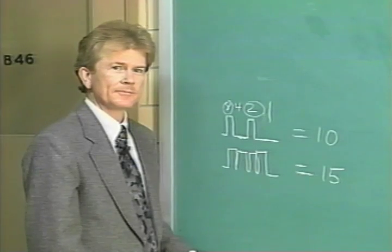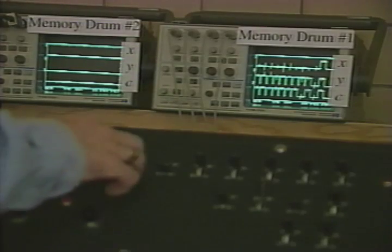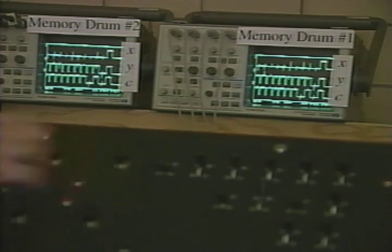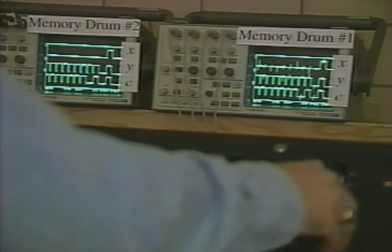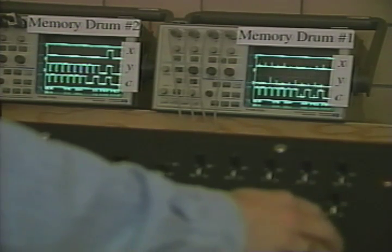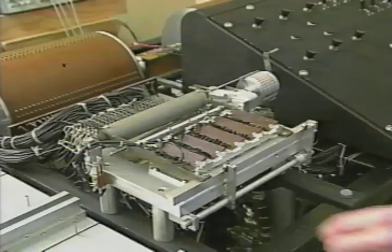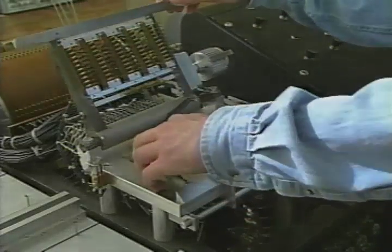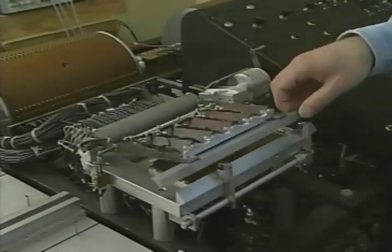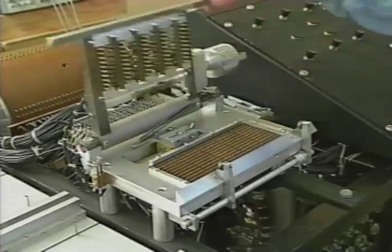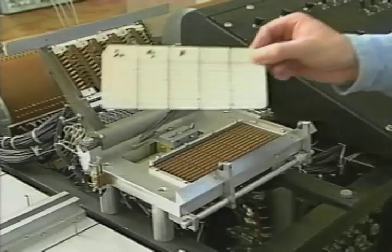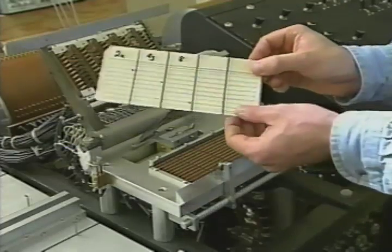The operator now tells the ABC to copy those three numbers to the other drum for safekeeping, then clears the first drum to receive the next card. We'll now enter the top equation — we entered the bottom one first so we can use the top one to eliminate a variable in the bottom one, just like you do when you work this kind of problem by hand.